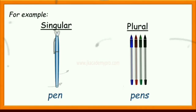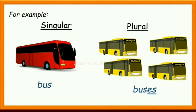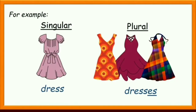Rule 2: Nouns that end with the letters S, SS, SH, CH, and X can be made plural by adding ES at the end of the word. For example: bus, buses.